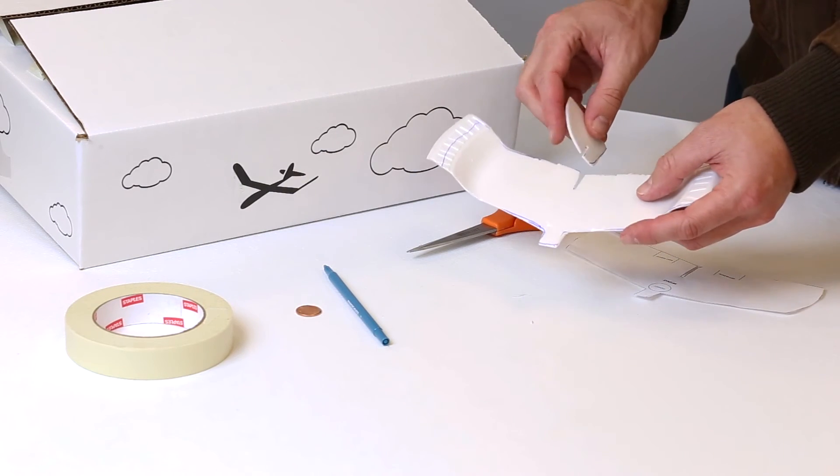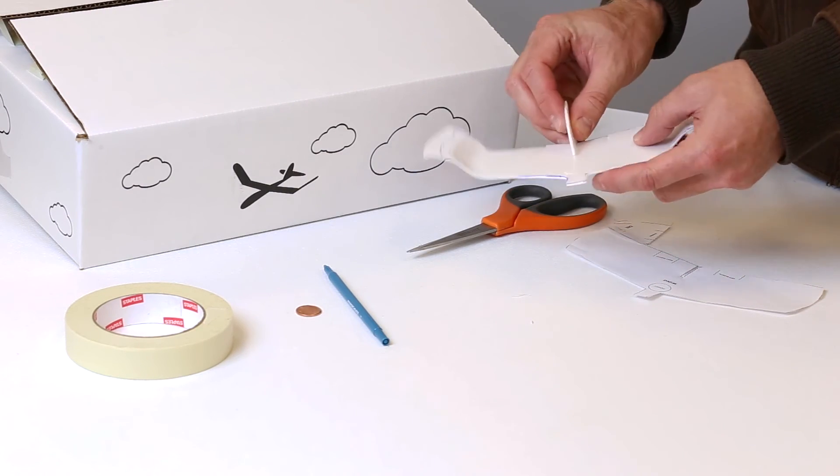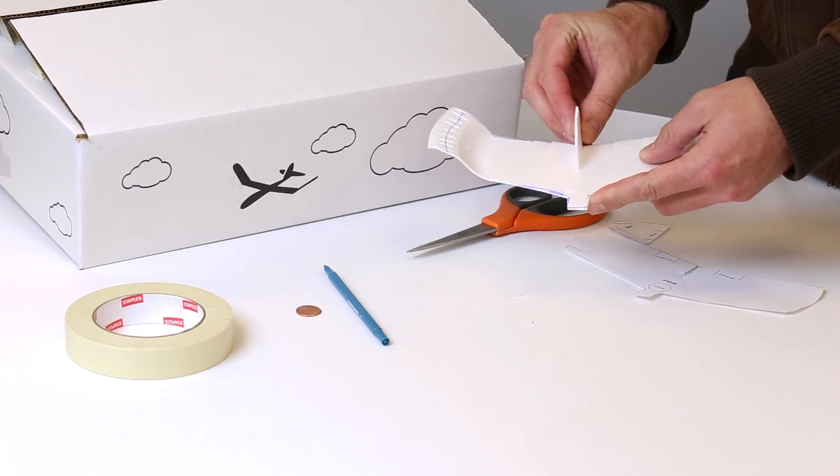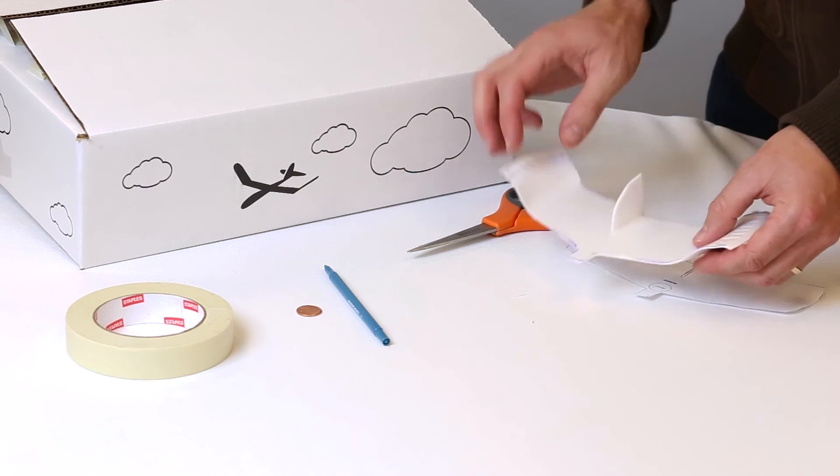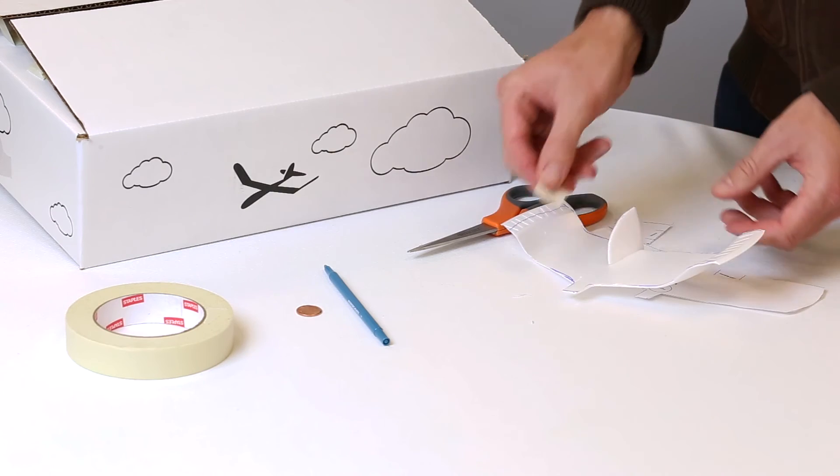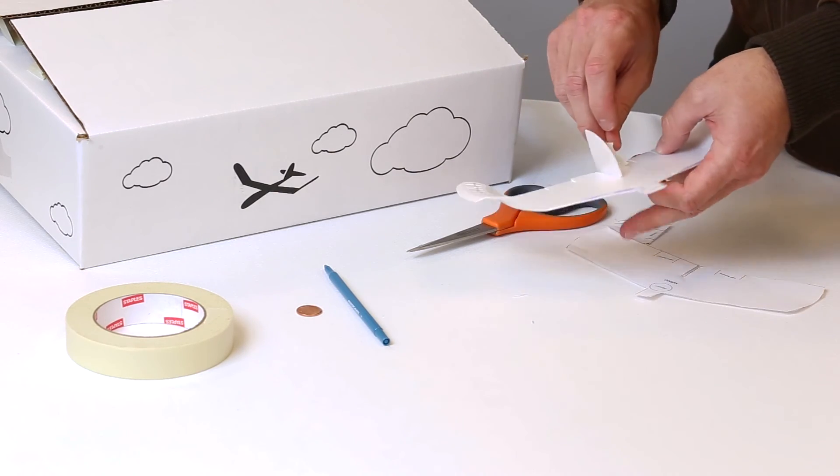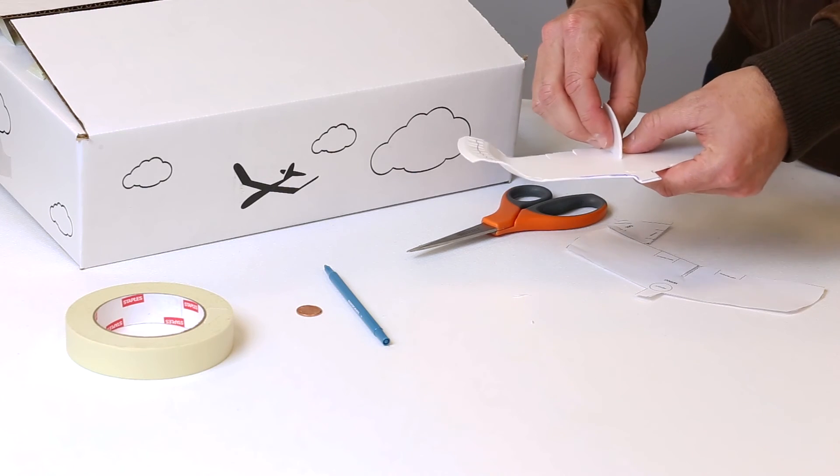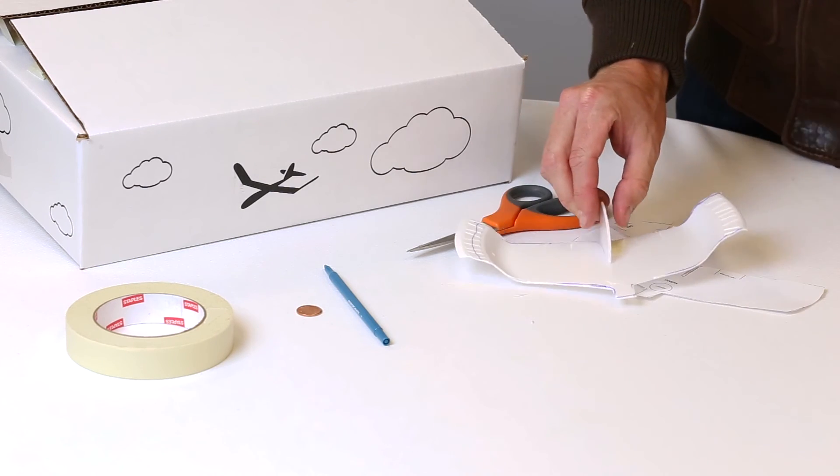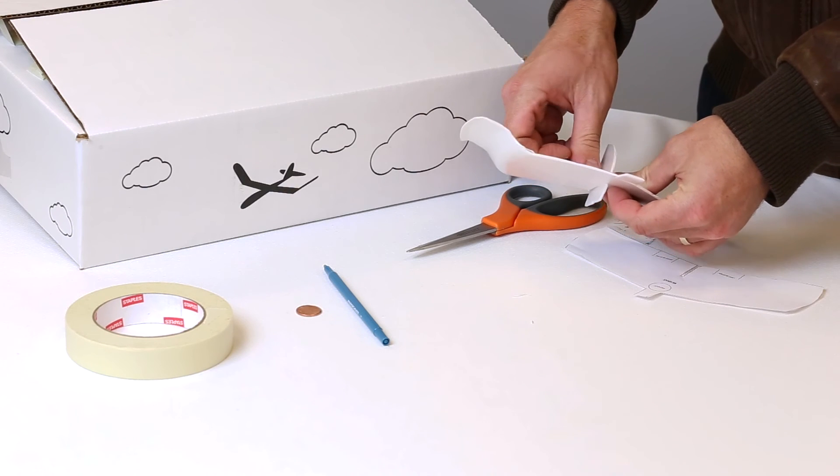And then slide the foam tail into the back of your foam plane like so and you can secure it by taking some masking tape and placing it along the sides so that the tail doesn't shift left or right so easily. That'll keep it nice and straight.